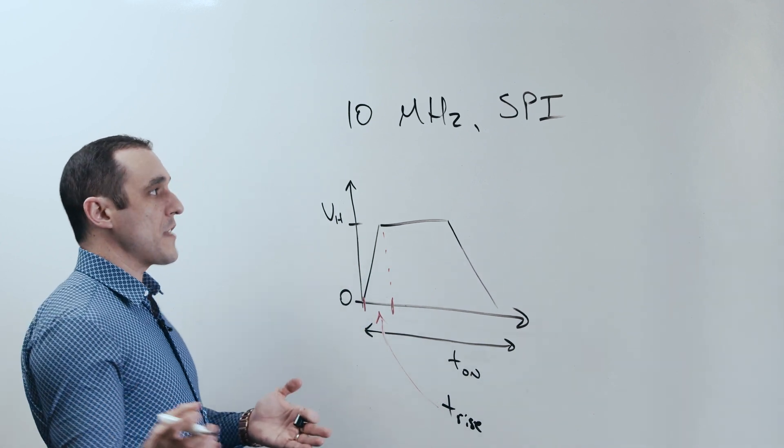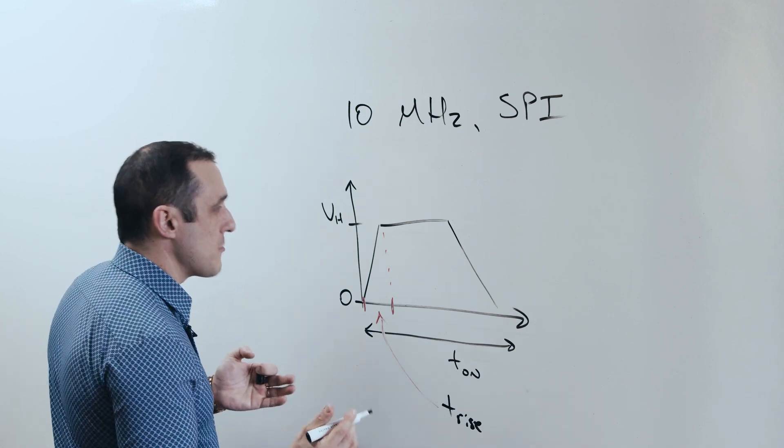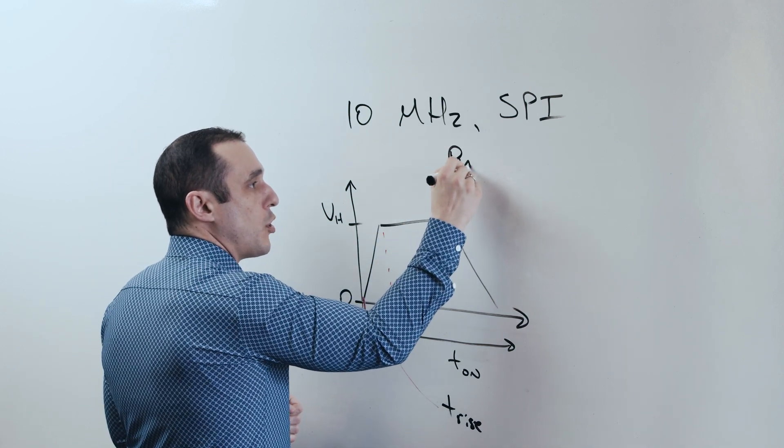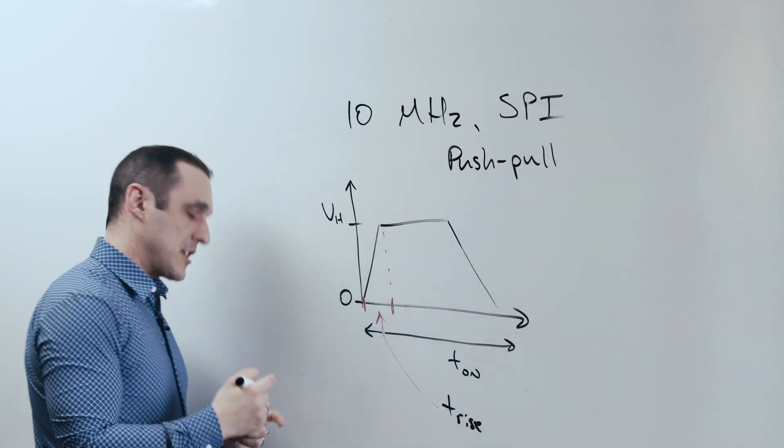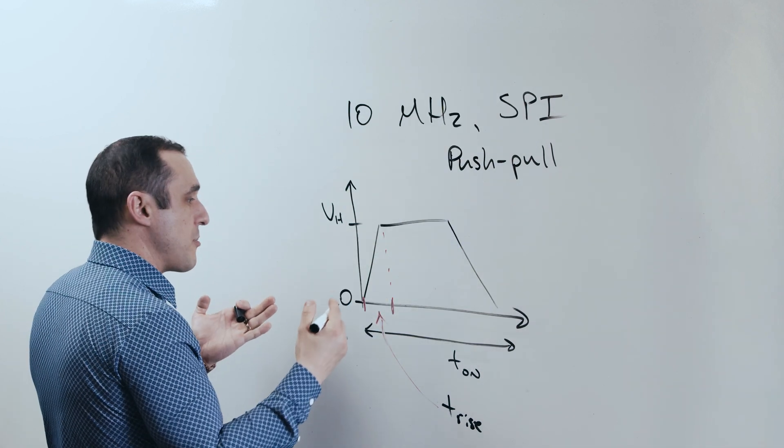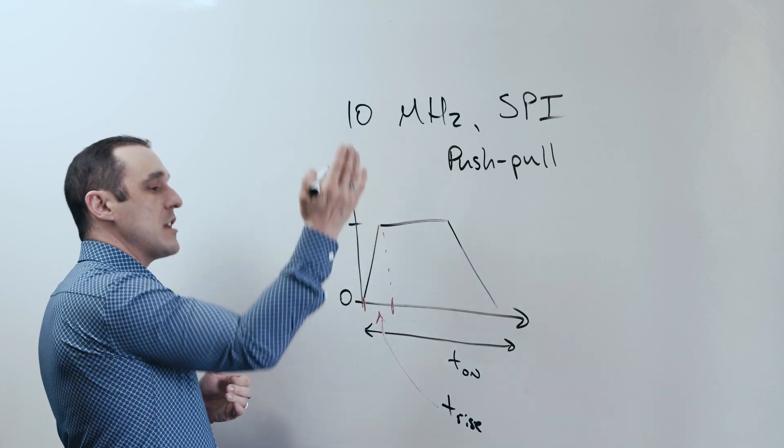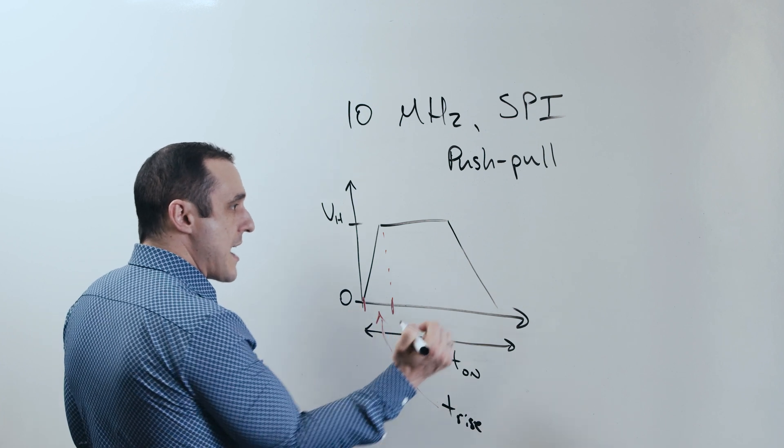Now the fall time also matters as well. And the rise time and the fall time are usually pretty close together. So what we care about here is the rise time. Now here's something very important that you need to know about clocks that are used in modern digital circuits, particularly in CMOS buffers, which generally have a push-pull type of topology. And that's certainly the case here for SPI. When you have this type of topology, the rise time could be very short, even if this on time or this clock frequency is very low.